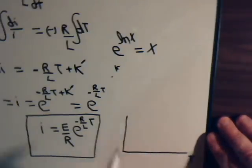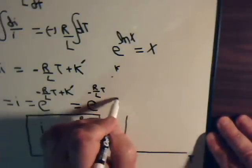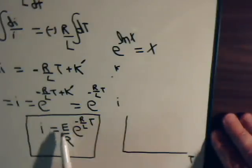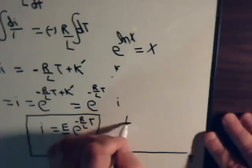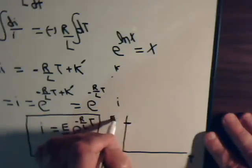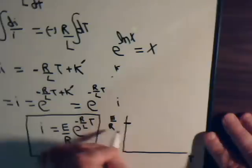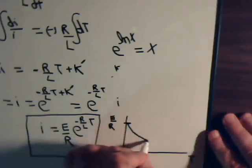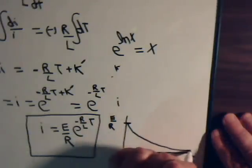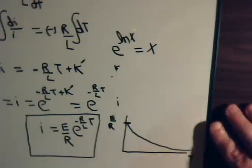Here's time, here's the current. It starts off at a value E over R. We know that. And then just exponentially falls off to zero. So that's the decay current.